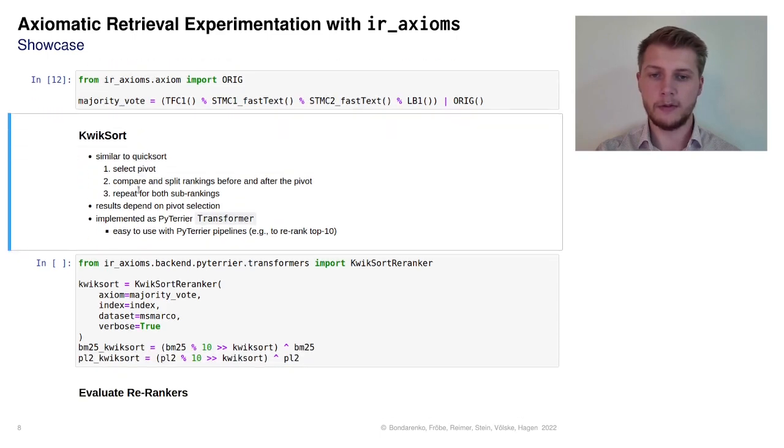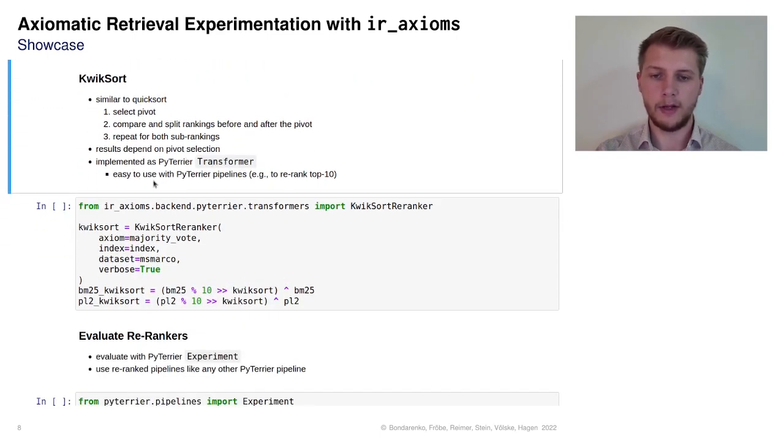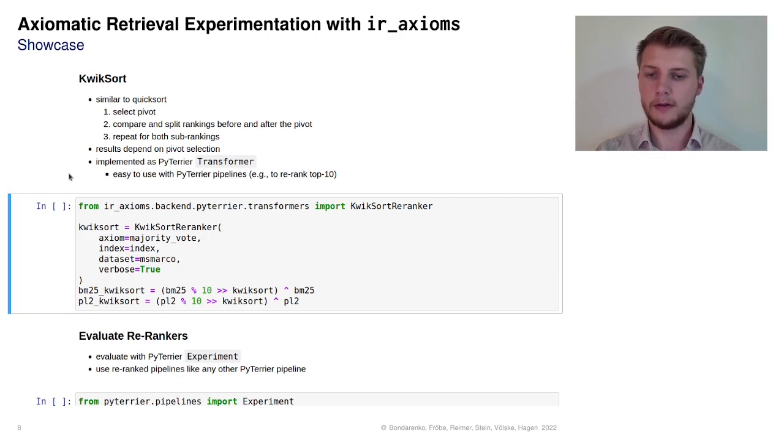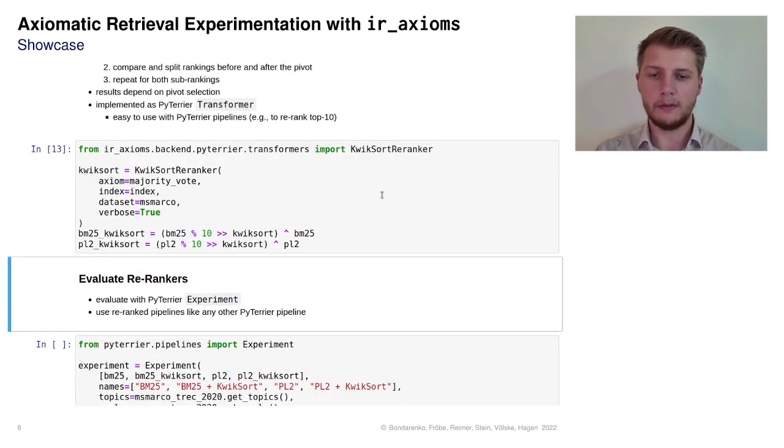For axiomatic re-ranking, IR axioms uses the quicksort algorithm, which is similar to quicksort sorting. We first select a random pivot and then partition the ranking into documents that should be ranked higher or lower than the pivot document. Because re-ranking is implemented as a PyTerrier module, we can easily apply it to re-rank the top 10 results of our two baseline rankers.